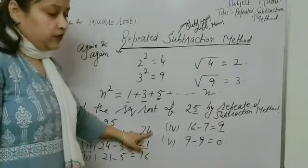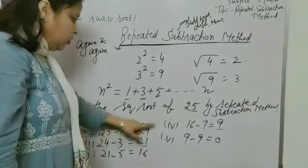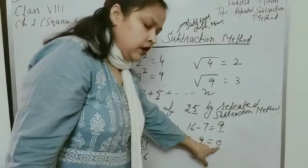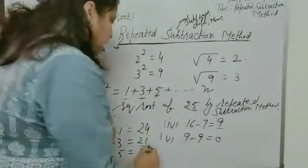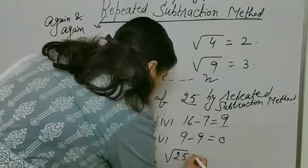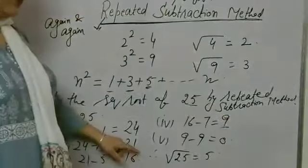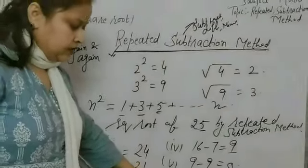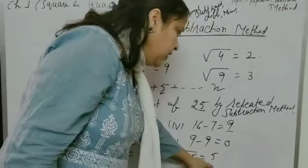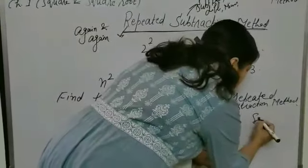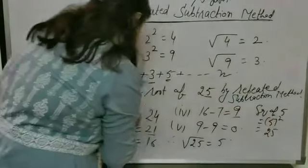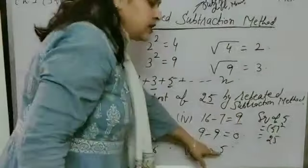Now, we get 0 in the 5th step — 1st, 2nd, 3rd, 4th, 5th. We get 0 in the 5th step. Therefore, the answer will be 5. Therefore, square root of 25 will be 5. Now, if you want to check your answer, whether it is wrong or right, then you will find it by doing the square of this number 5. Square of 5, which is equal to 25. Therefore, our answer is correct.